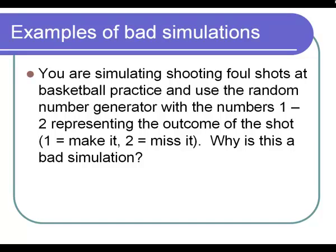Here's another simulation that's set up incorrectly. We are simulating shooting foul shots at basketball practice. We're going to use number 1 to represent making it and number 2 to represent missing it. They're simulating 1, 2 in this simulation. That's bad because most people have a certain amount of skill. They're not shooting 50-50.